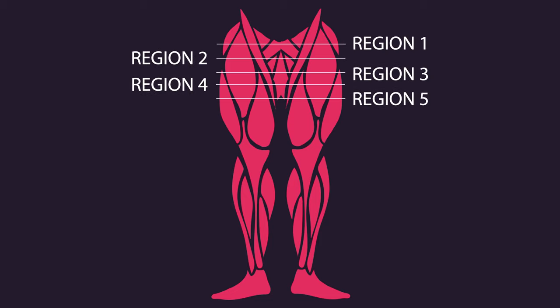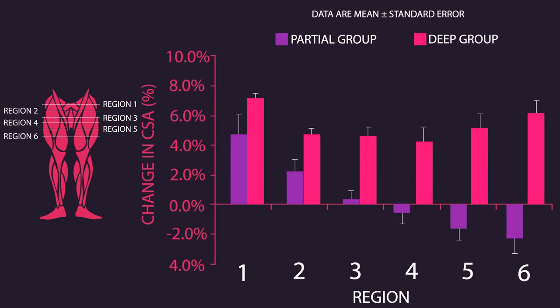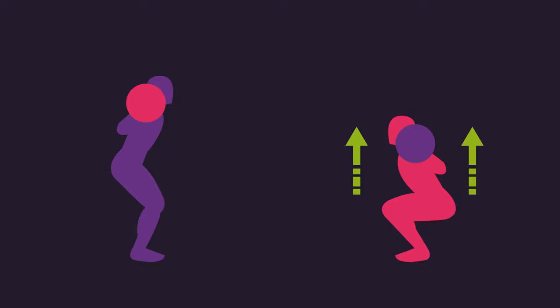Front thigh cross-sectional area, consisting of the quadriceps, sartorius, and adductors, measured across six regions, was all greater for the deep squat group. The partial squat group only experienced growth at the two proximal regions. Therefore, this study indicates squatting to 120 degrees of knee flexion evokes greater overall growth of the front thigh.